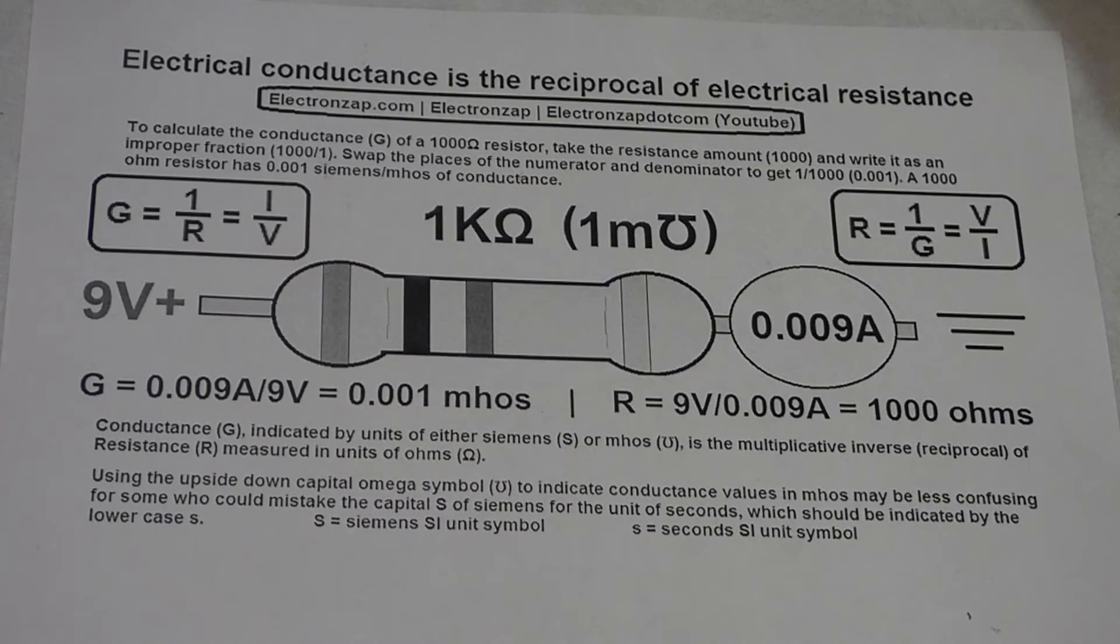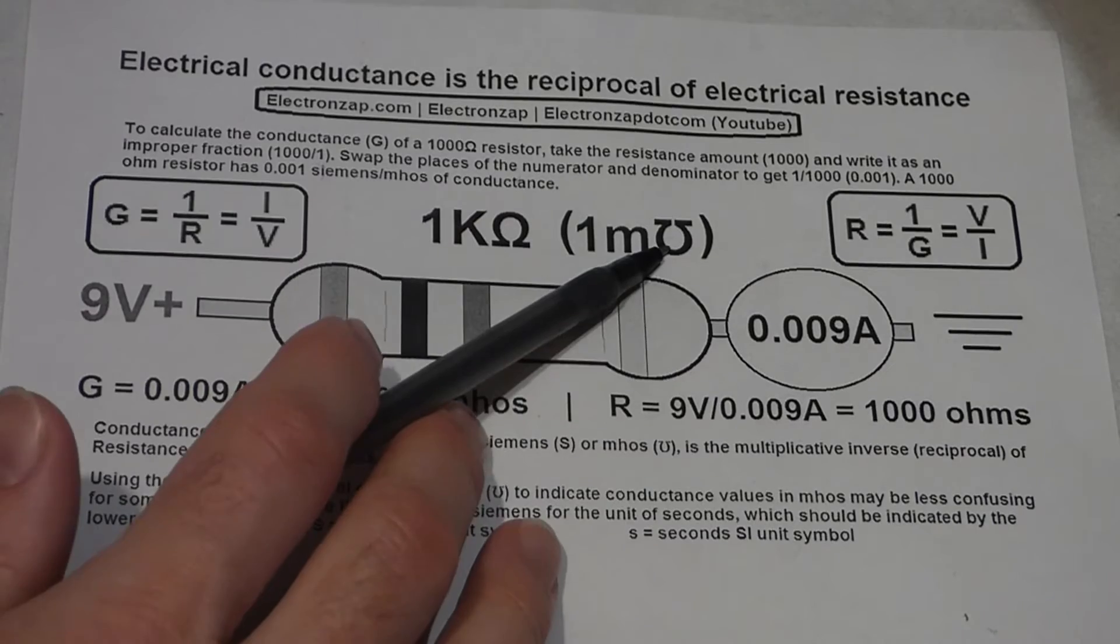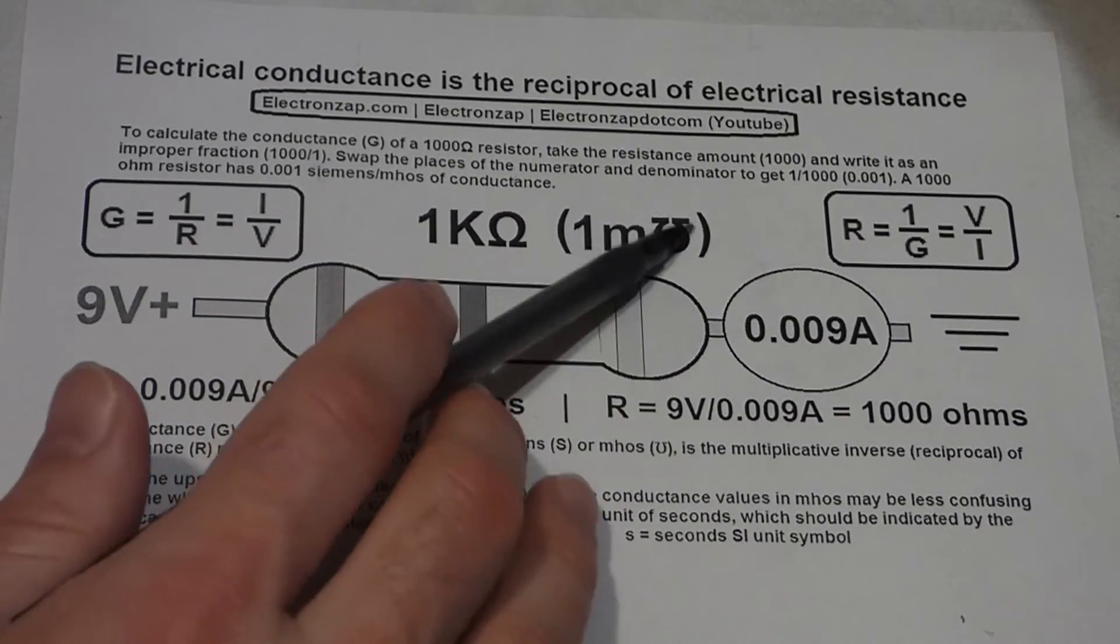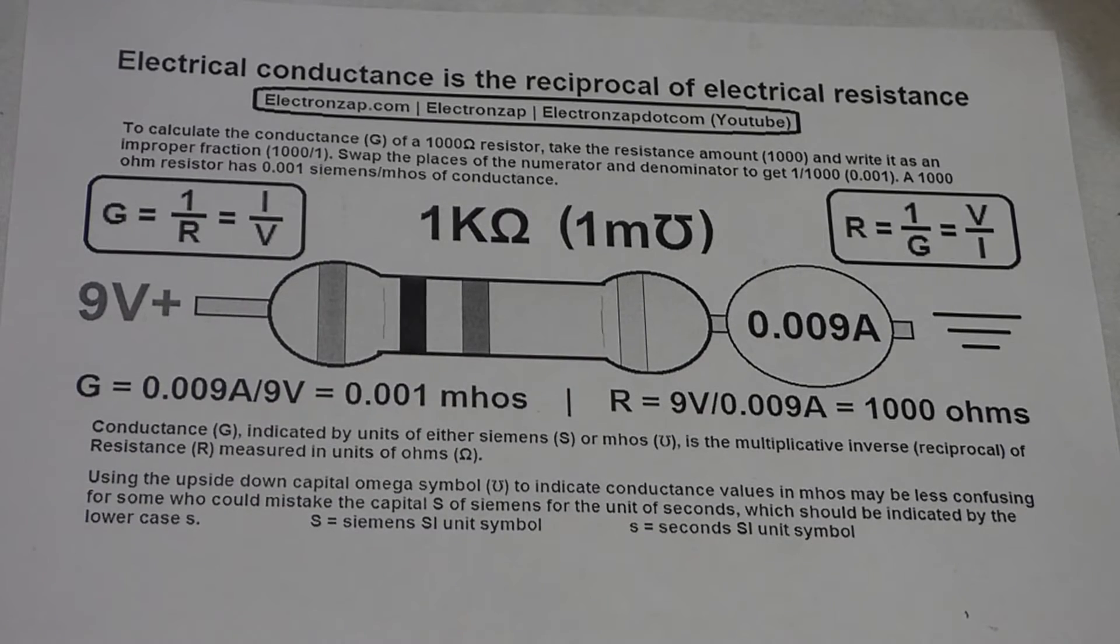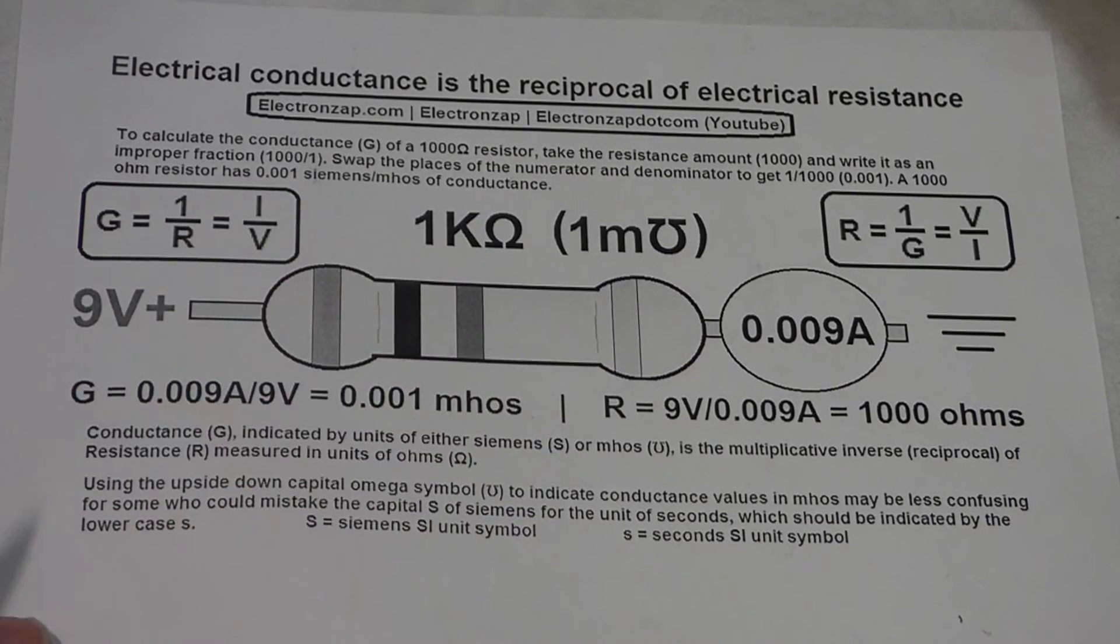Not only is the symbol turned upside down, but they flipped the spelling of the symbol name to just Mhos. They did that on purpose just to make it easy to realize it's the opposite of ohms. Instead of resistance, it's conductance.